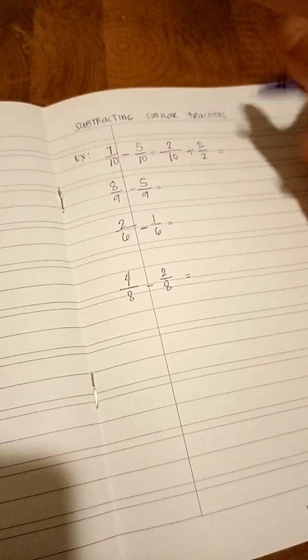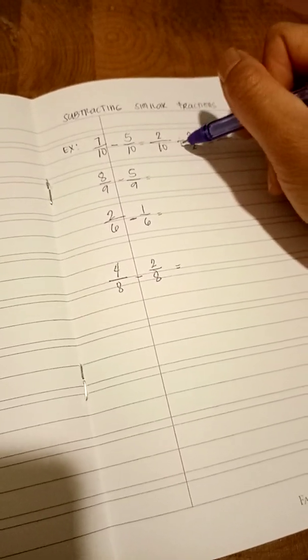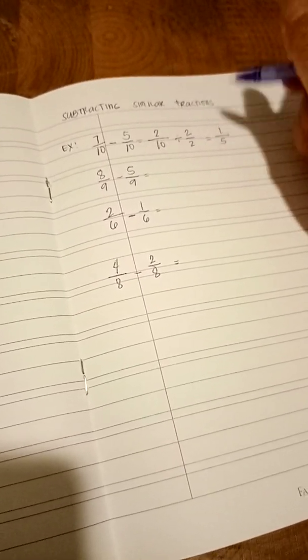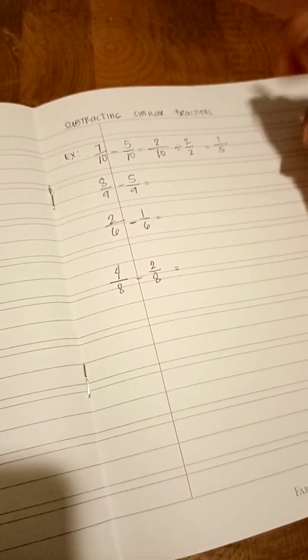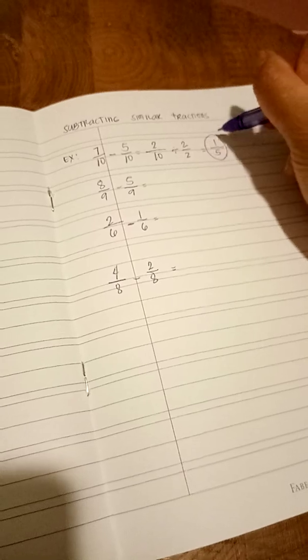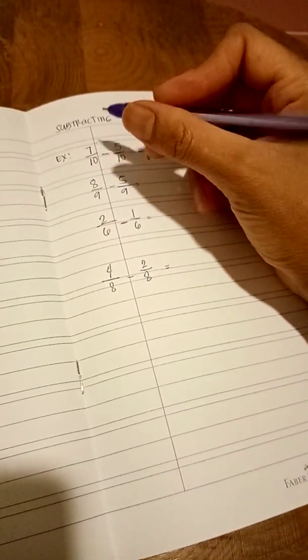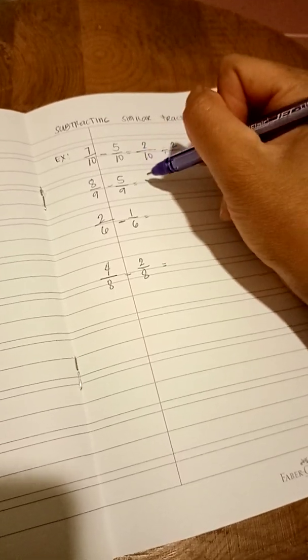2 divided by 2 equals 1. 10 divided by 2 equals 5. Right? This is your final answer. This is the simplest form. So, let's proceed to the other one in order for you to have more examples.